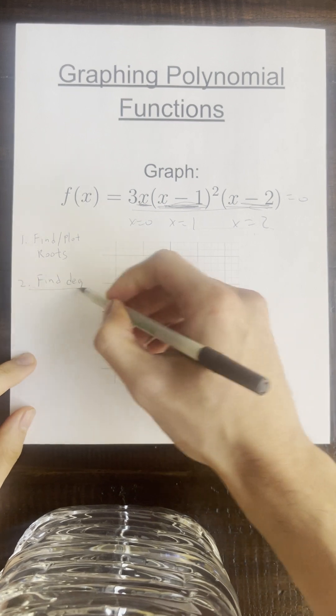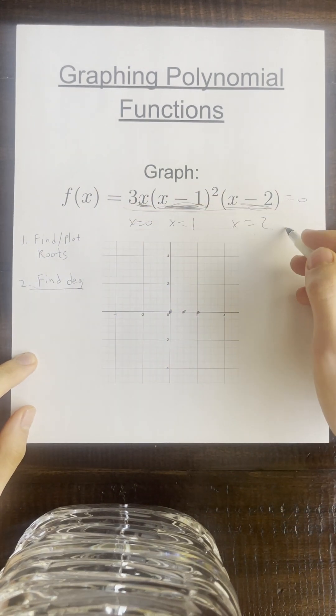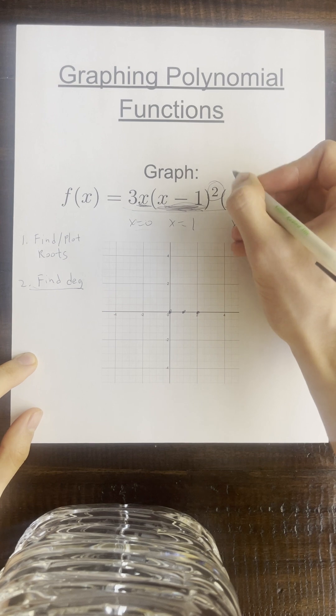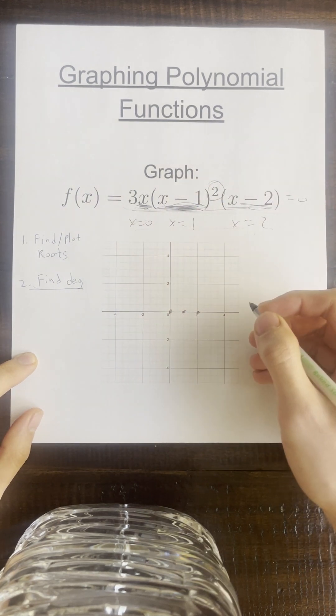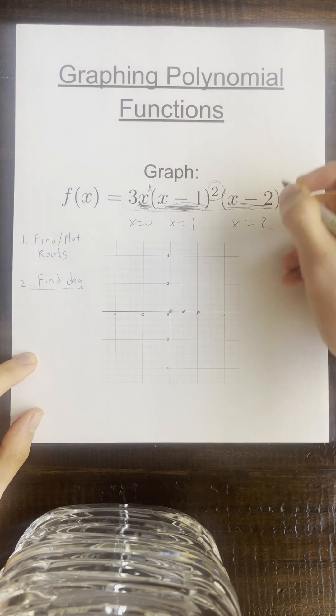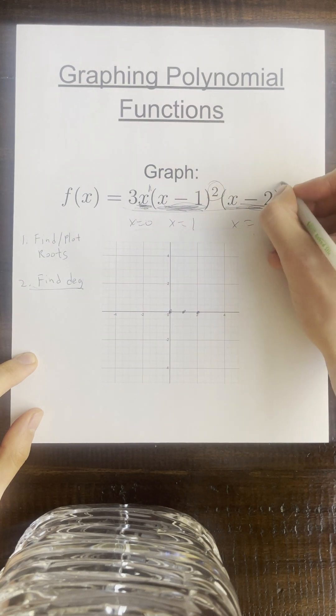Our next step would be to find the degree of the polynomial. So you can see here x minus one has a multiplicity of two. How about x? Wherever there's no exponent, I'm just going to put a one. So x has a multiplicity of one, x minus two has a multiplicity of one.